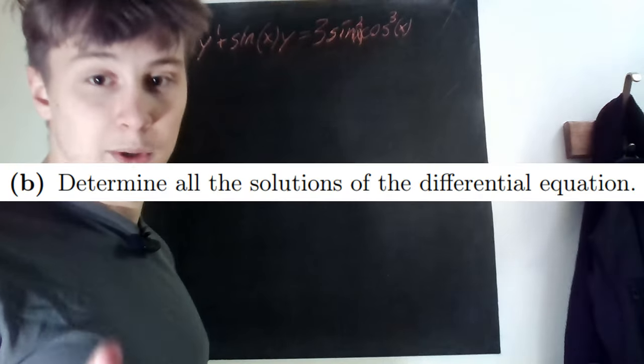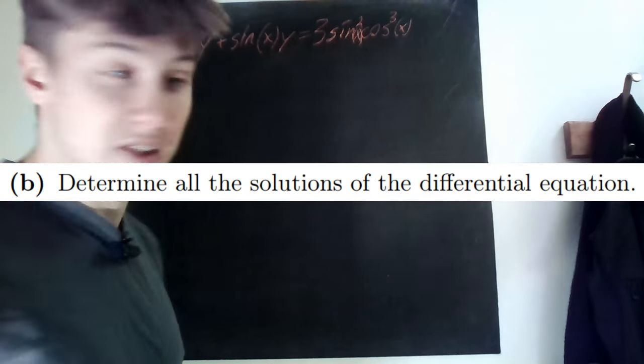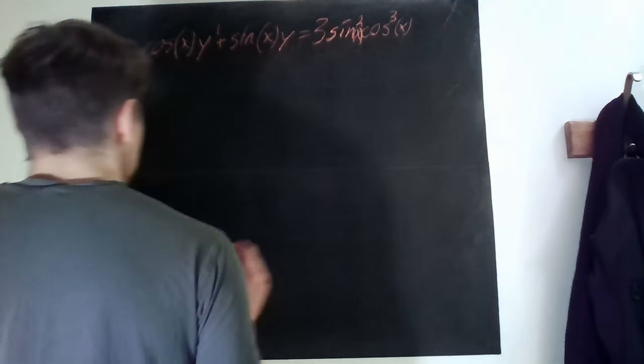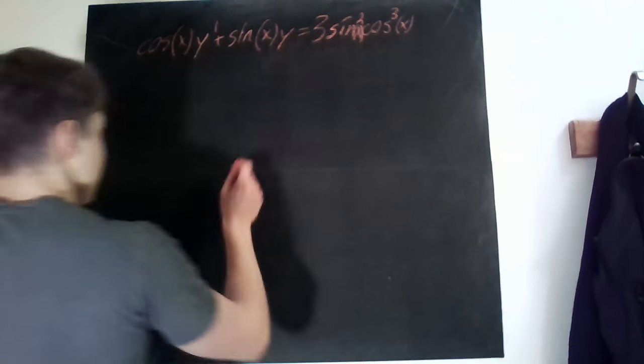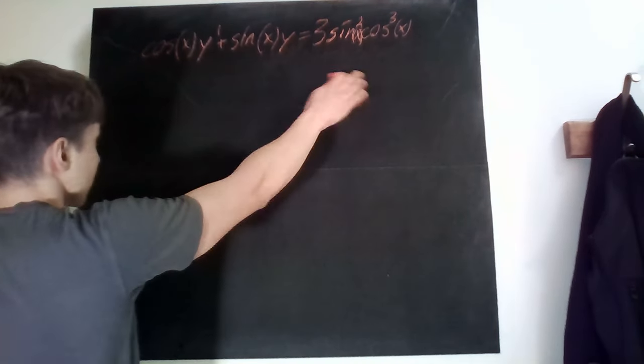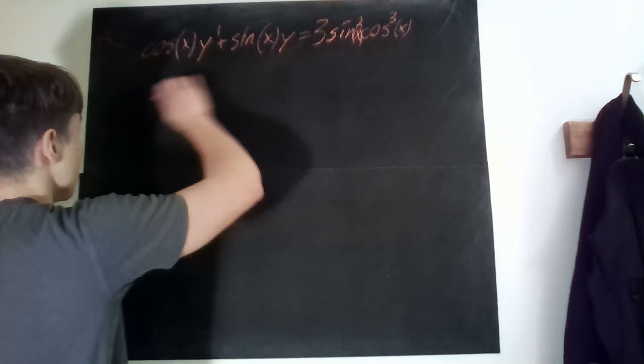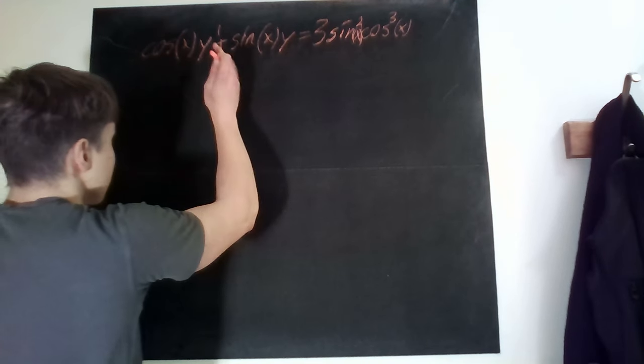But the second one, determine all the solutions of the differential equation. Now we're talking. So firstly, as I just said before, we want to divide by cosine everywhere because we want to have the form y prime plus some function of x times y equals something.